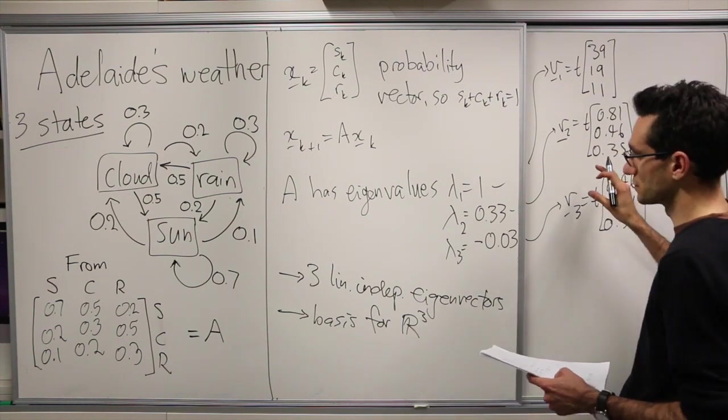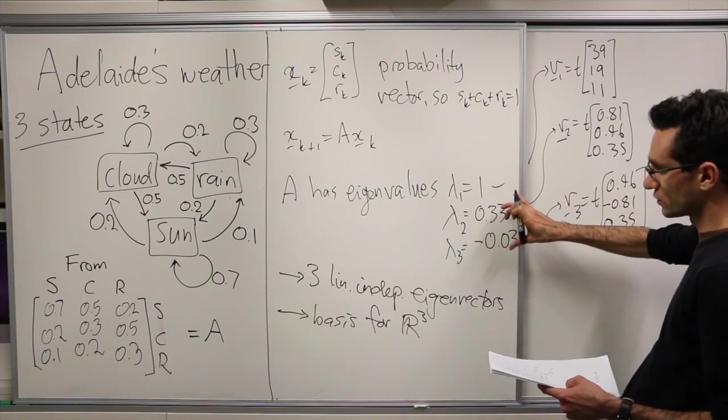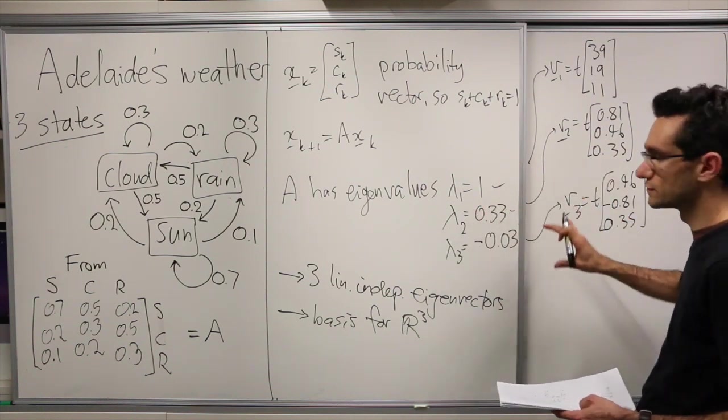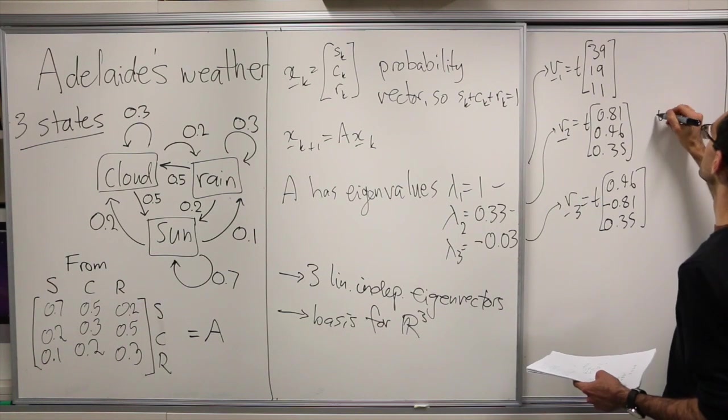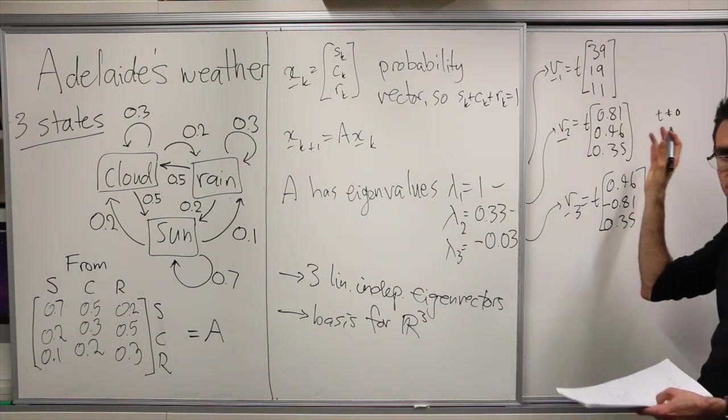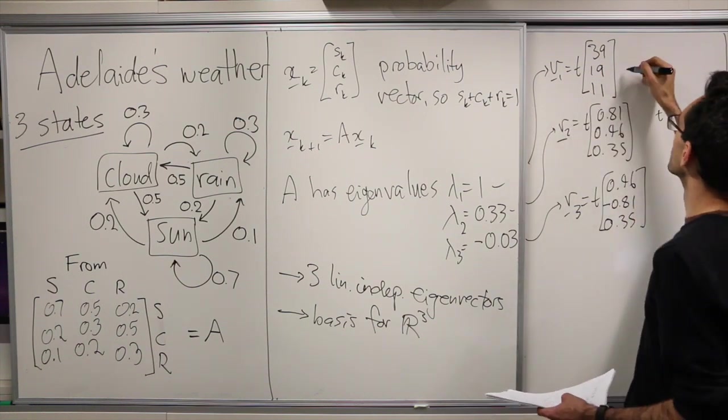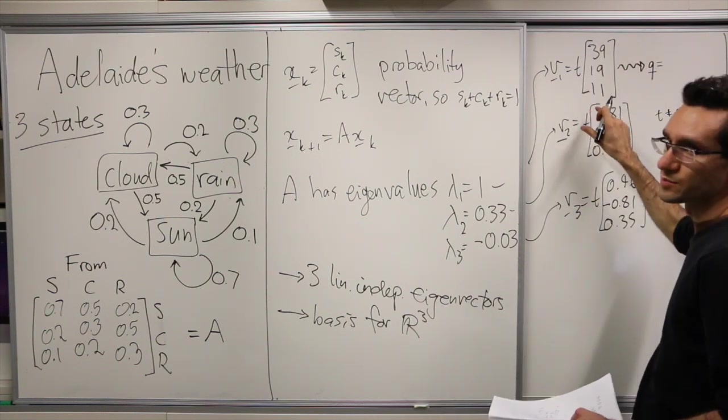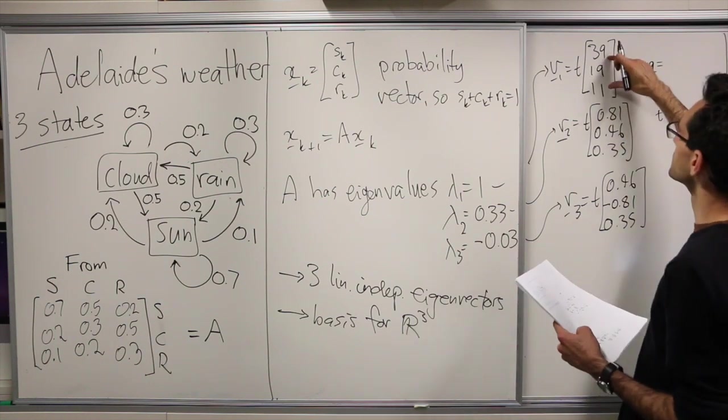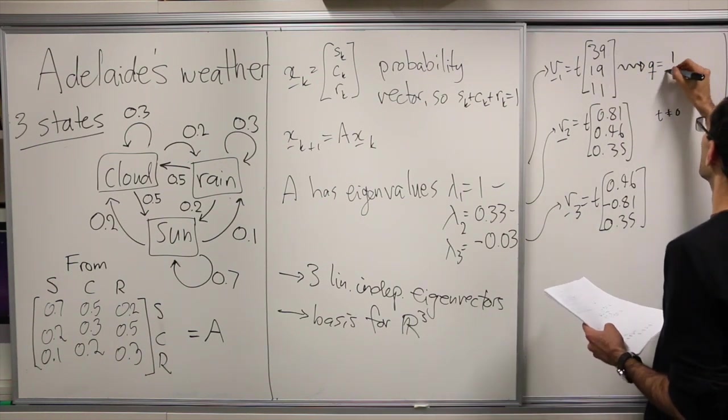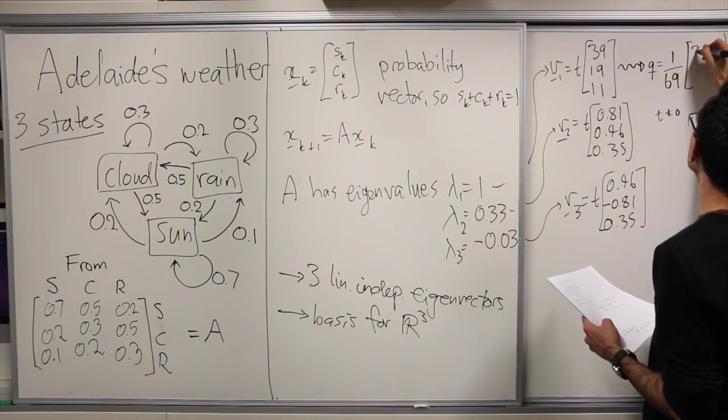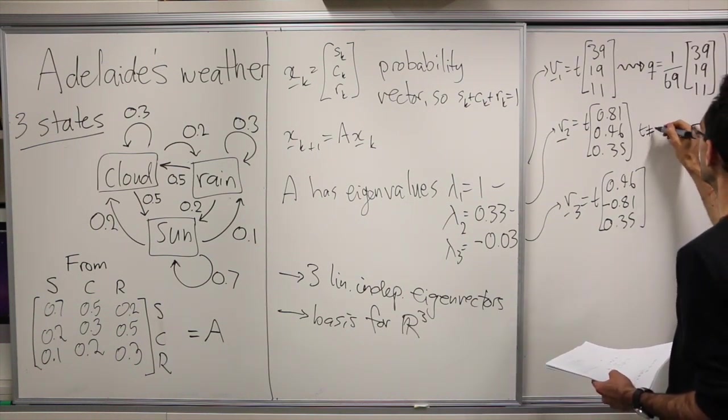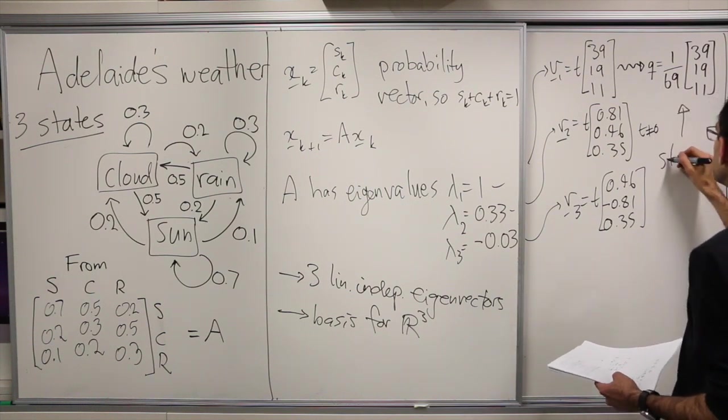So these two aren't so important because their eigenvalues are smaller than 1 in magnitude, and so as time goes on, these are going to become less and less influential. But it's good just to see what these are. So again, this is t not 0 in all cases for eigenvectors. But we want to find a steady state vector. So we write q, and we find the value of t such that this is a probability vector. And so we take t to be 1 over the sum of these entries. So that's 1 over 69 times [39, 19, 11]. And this is our steady state vector.